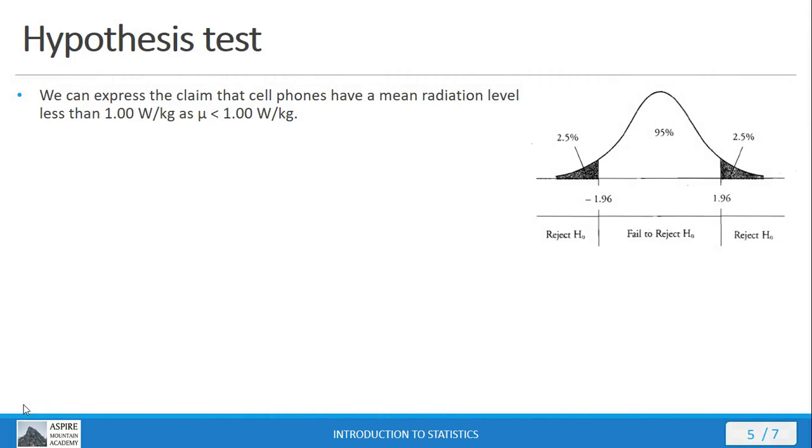We have the claim that the cell phones have a mean radiation level less than 1 watt per kilogram. We're going to express that claim as μ < 1. Now we're ready to write our hypotheses. The null hypothesis is always a statement of equality. The alternative hypothesis has no semblance of equality in our claim, therefore we can adopt it as the alternative hypothesis.